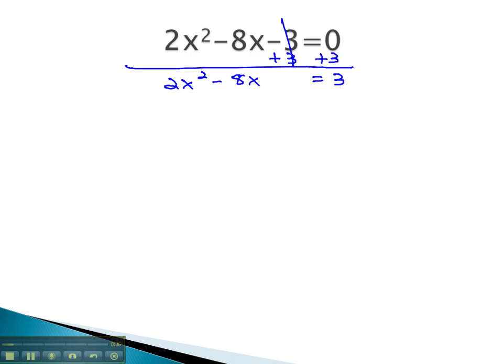Our next step is always to get the x² alone by dividing by a, or the number in front. Dividing everything by 2 gives us x² - 4x = 3/2.